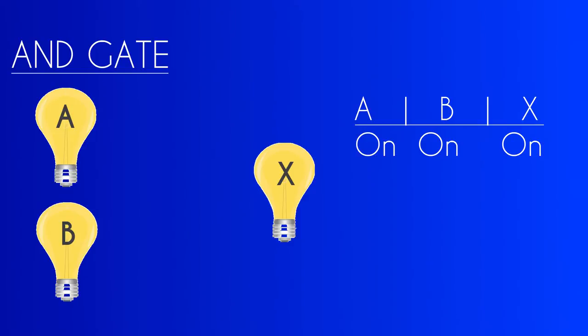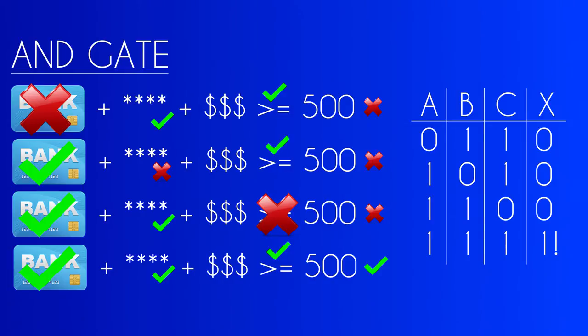A real life example of this would be a bank machine. To withdraw, multiple conditions have to be true. You have to have a valid card to be able to access your account. You have to have the PIN matching that card to verify that you own that account. And you have to have an available balance to withdraw the amount of money that you want to withdraw. So even if two of the criteria are met, you still don't get money.